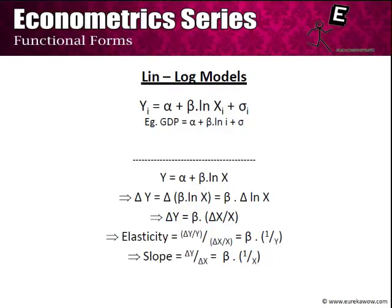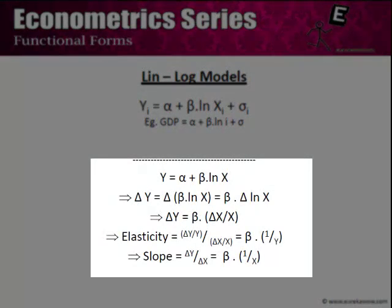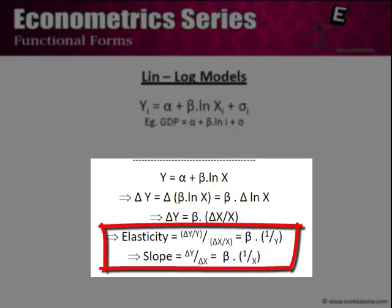The next functional form is the lin-log model, where the y's are in linear form but the x's are in log form. Apart from theoretical reasons, this form can also be justified when yi is extremely sensitive to changes in xi. Taking total differentiation shows that, again, elasticity and slope are not constant throughout the regression line; instead of being directly proportional to x or y, they are inversely proportional to x and y respectively.